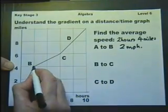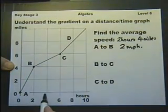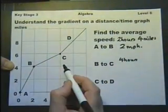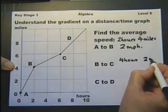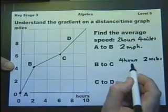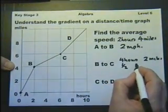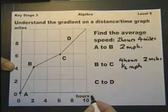Now let's look at going from B to C. B to C takes four hours and covers two miles. So in one hour it would be half a mile. So if in one hour it's half a mile, it must be half a mile per hour. That's the speed.